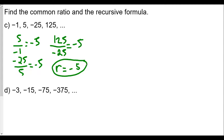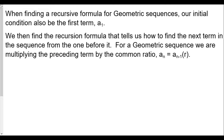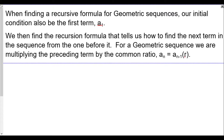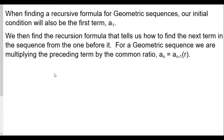Now for the recursive formula for geometric sequences: our initial condition will also be the first term A1. We then find the recursive formula that tells us how to find the next term from the one before it. For a geometric sequence, we are multiplying the preceding term by the common ratio. So A(n) = A(n-1) × R.